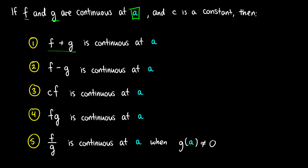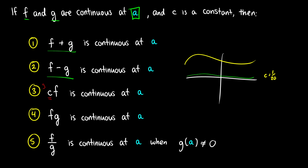If f and g are continuous at a point a, then f minus g will be continuous at a — the same idea, except the second curve is being subtracted from the first. If we have a constant c, such as 2, 3, or pi, then c times the function is continuous. You can think of this as scaling: if we have some curve and multiply it by 1/20, we end up with something really small but still continuous.